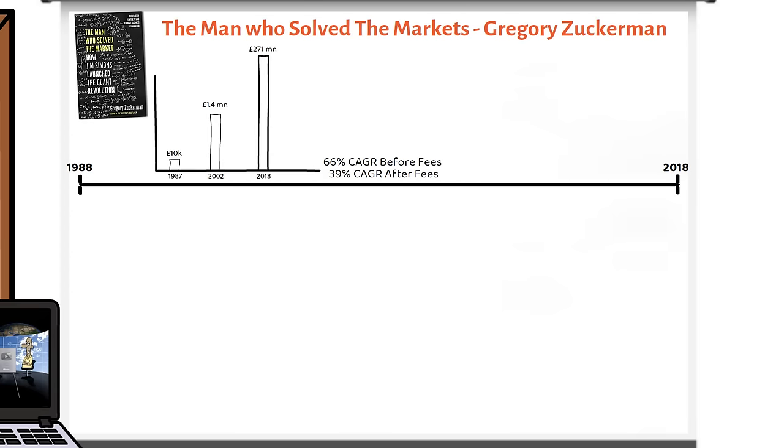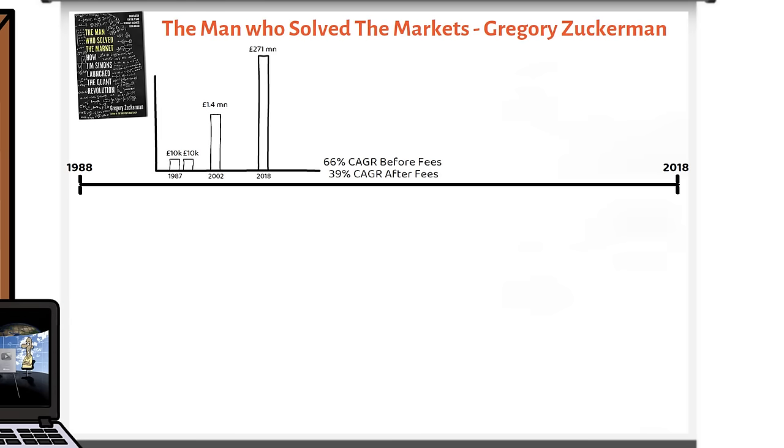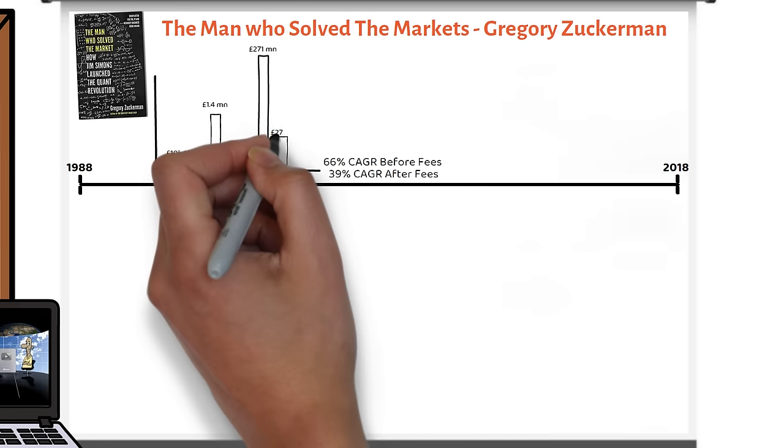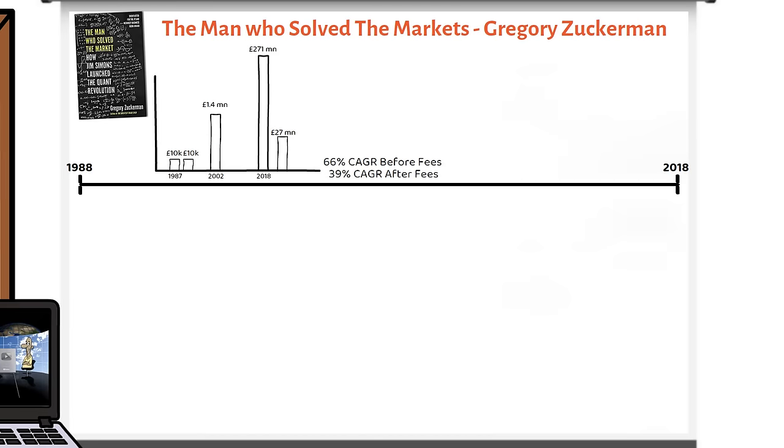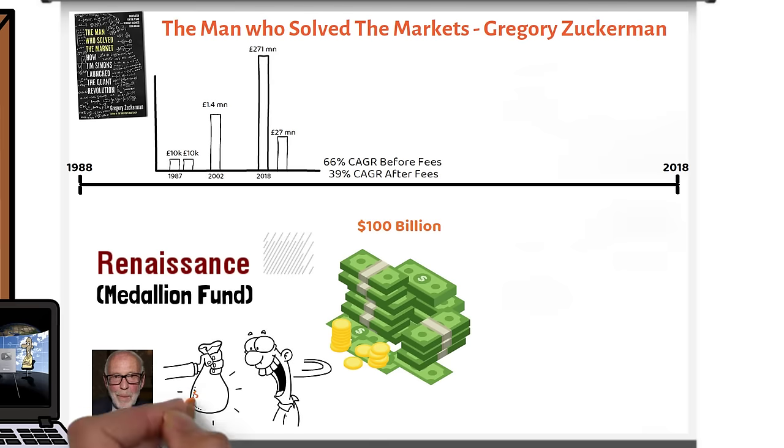That's an incredible return considering that the same money invested in the Nasdaq, one of the best performing indexes, would have grown to a much lower $27 million. Simons' firm, Renaissance Technologies, raked in trading gains of more than $100 billion in its flagship medallion fund. As a result, Jim's personal fortune also swelled to more than $28 billion.